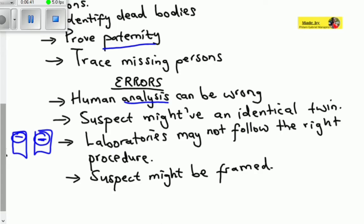The second error is the suspect might have an identical twin. When you have two identical twins with the same features, they have the same DNA, so their DNA profile will always match.